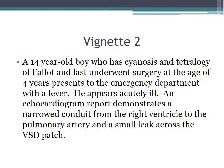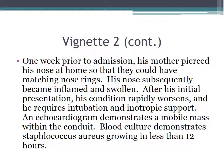The second vignette represents another type of the same pathology. A 14-year-old boy with cyanosis and tetralogy of Fallot, who last underwent surgery at age four, presents to the emergency department with a fever. He appears acutely ill. An echocardiogram demonstrates a narrowed conduit from the RV to the pulmonary artery, as well as a small leak across the VSD patch. One week prior to admission, his mother pierced his nose at home so they could have matching nose rings.